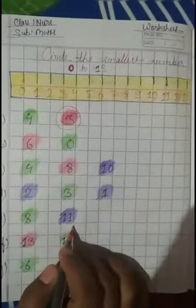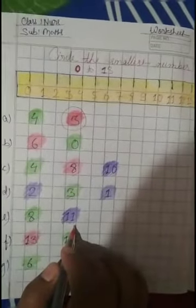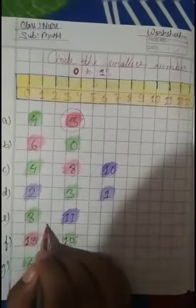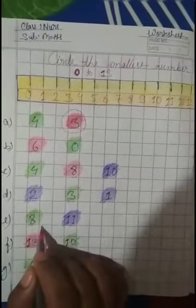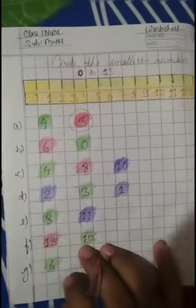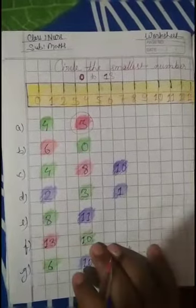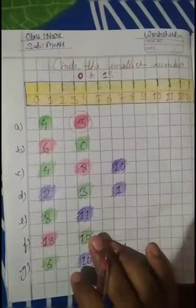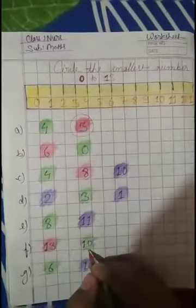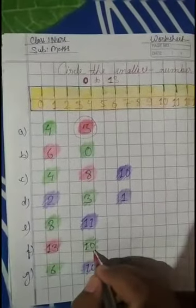And next line mein dekhen ga — 8 hai aur 11 hai. Dono mein smallest number kaun sa hai? In dono mein sab se pahle kaun sa number aata hai? 8 aata hai, then 9, 10, 11 aata hai. So sab se smallest number 8 hoga, so yahan 8 ko circle karna hai. And then next line mein 10 aur 13 aata hai. So pahle 10 aata hai, then 11, 12, and then 13. So 10 smallest number hoga. So 10 ko circle karna hai.